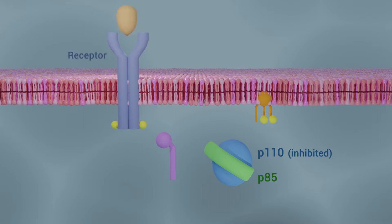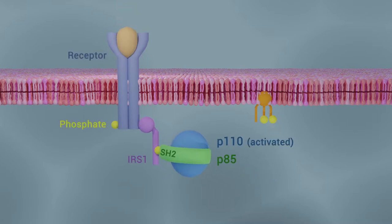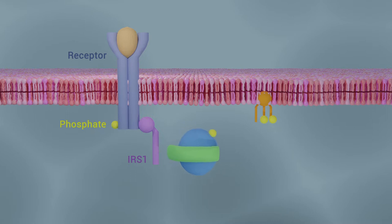Upon growth factor stimulation, the SH2 domains of P85 bind to the phosphotyrosine residues on receptor protein kinases or adapter proteins such as insulin receptor substrate 1, which activates PI3 kinase.